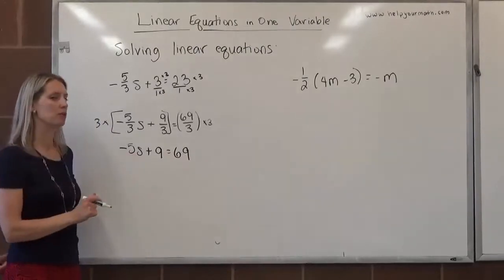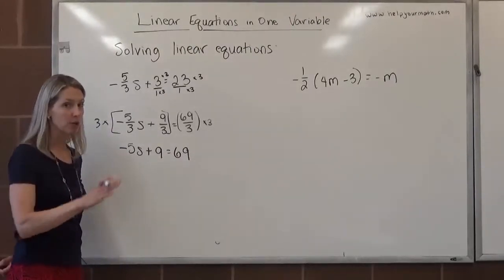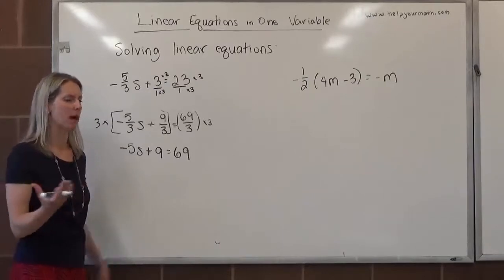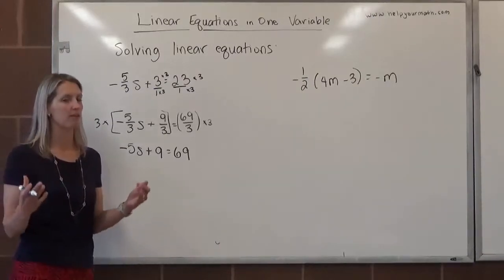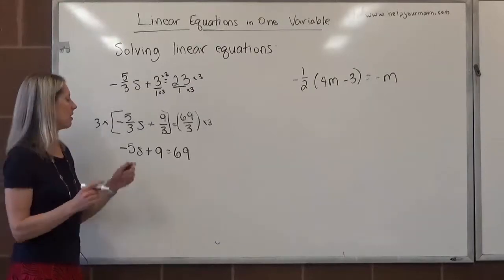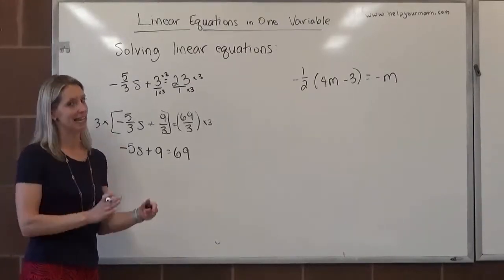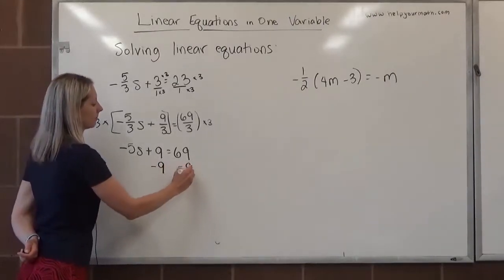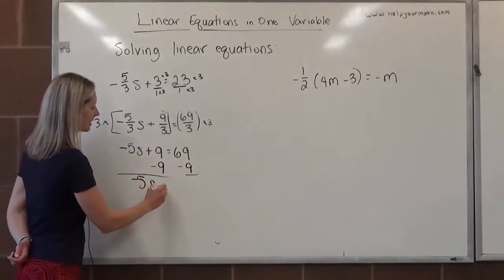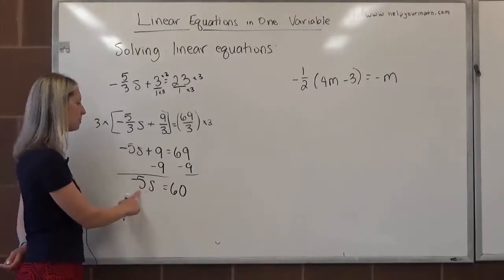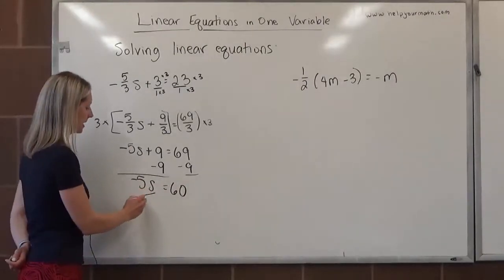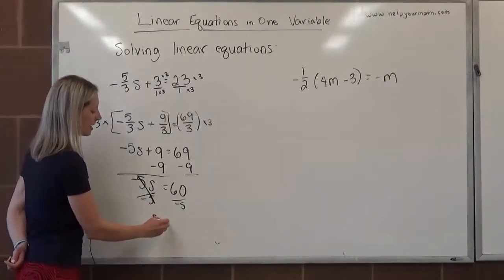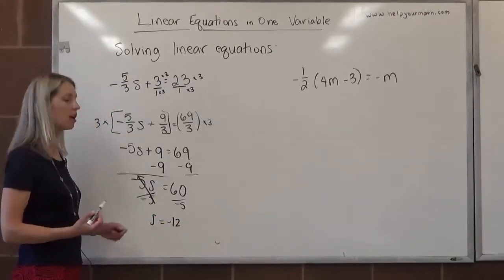At this point, I do want to caution about using the variable S. S's, if you're not careful, can morph their way into being 5s, in which case if you turn this into a 5, you no longer have any variables in the problem. So you want to be really careful with certain variables that kind of look like numbers. Now we're going to get S by itself. I'm going to take away 9 from both sides. That's going to leave me with negative 5s equals 60. To get S by itself, it's being multiplied by negative 5, so I want to divide both sides by negative 5. 60 divided by negative 5 is negative 12. So our solution here, S equals negative 12.